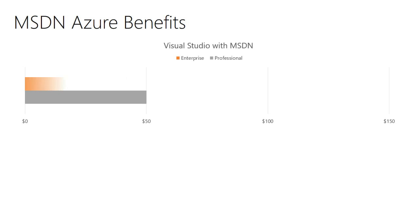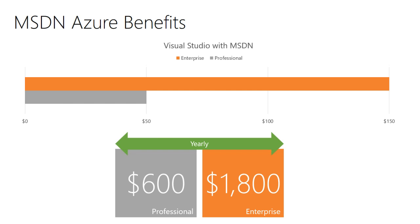Did you know that as an MSDN subscriber, you are entitled to free credits each month to use on the Microsoft Azure platform? Depending on your level, you either have access to $50, $100, or even $150 per month. Over the course of a year, that can add up to $1,800 of free cloud credit.